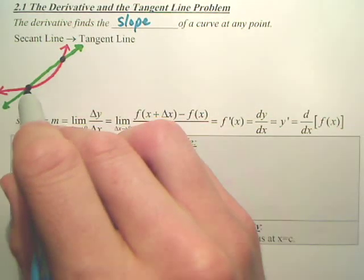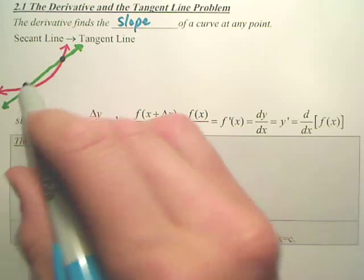Tangent has only one point. It's at a point, it's the slope at one point, basically. Secant has two points.